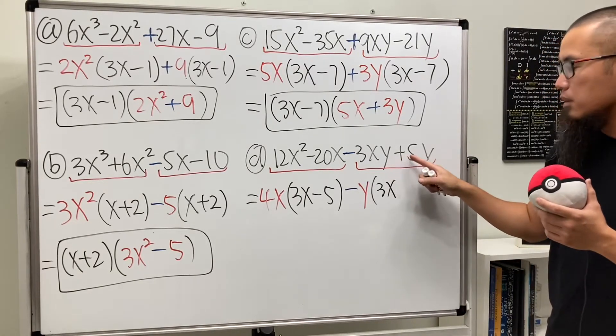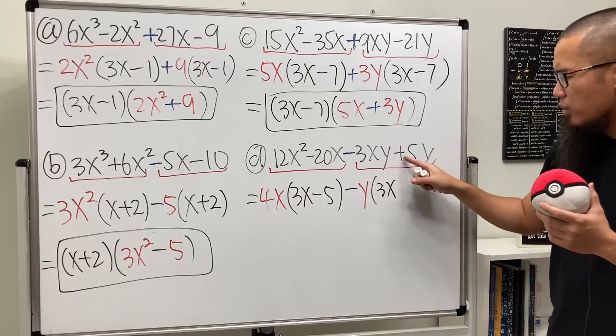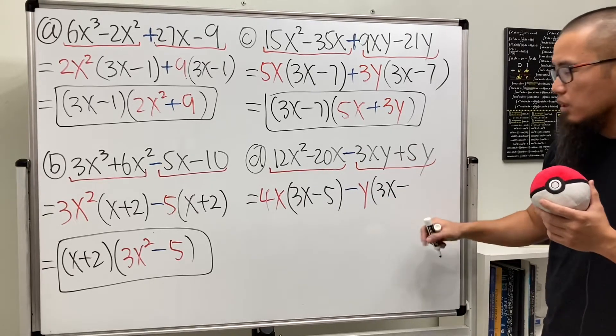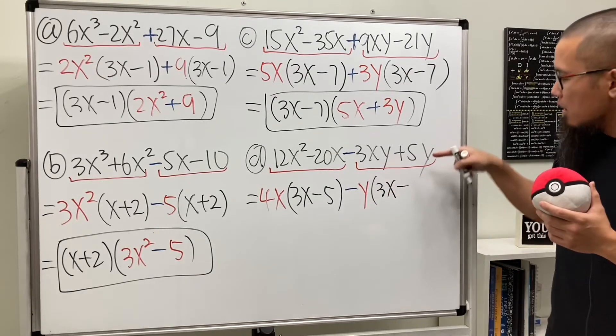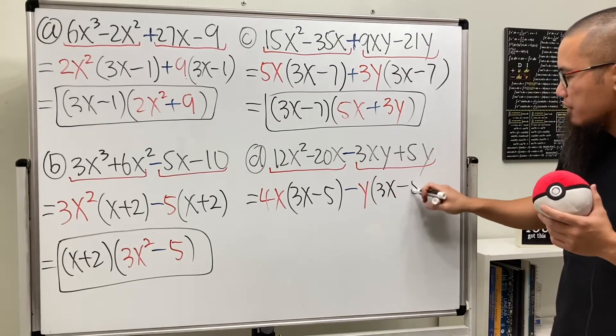Here, originally it was positive. But we took out a negative. So this right here actually becomes a negative. Again, positive divided by negative gives you negative. The y is on the outside already. So we just have to write down the 5.